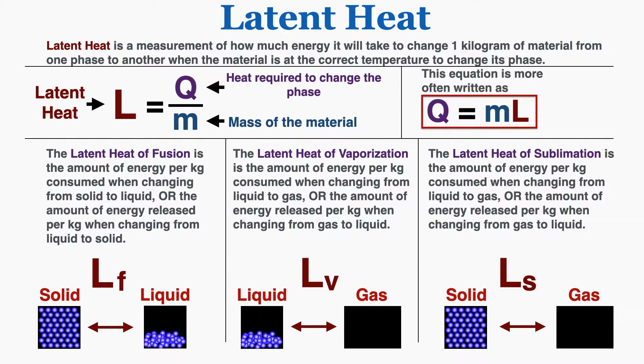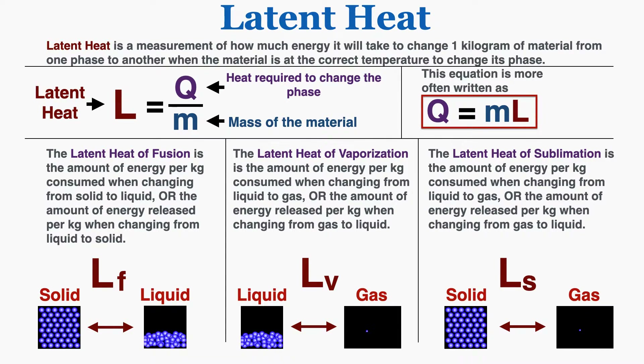This equation is more often written as Q equals m times L. Each material actually has three latent heats: fusion, vaporization, and sublimation.